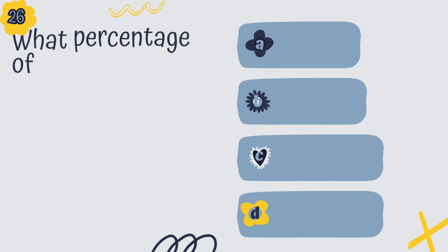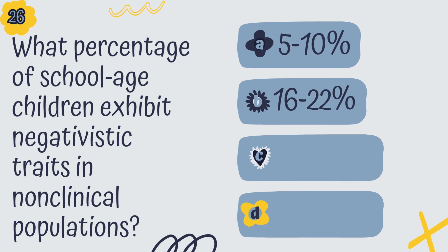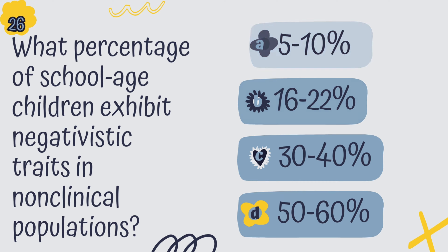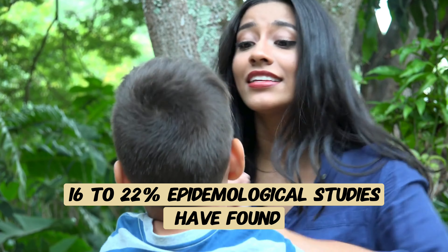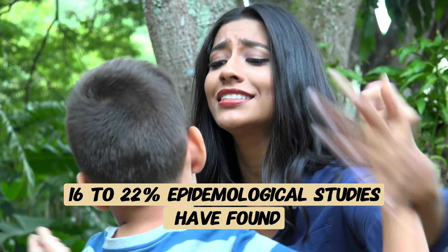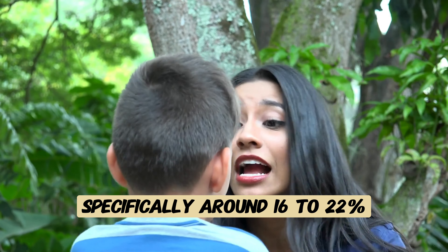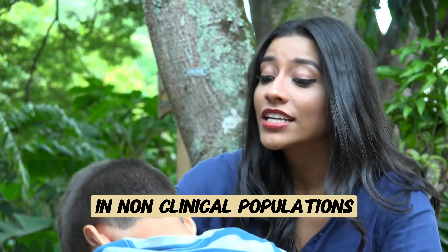Question 26. What percentage of school-age children exhibit negativistic traits in non-clinical populations? A. 5 to 10 percent, B. 16 to 22 percent, C. 30 to 40 percent, or D. 50 to 60 percent? The correct answer is B, 16 to 22 percent. Epidemiological studies have found that around 16 to 22 percent of school-age children exhibit negativistic traits in non-clinical populations.